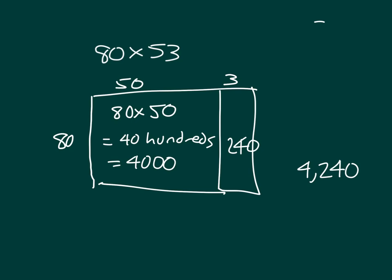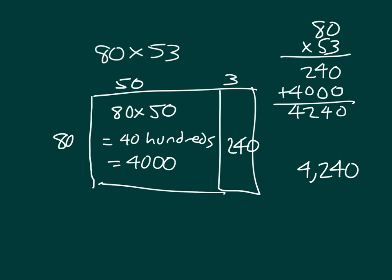Let me show you this problem vertically. 80 times 53. 3 times the 0 being 0. 3 times the 8 is 24. Since we're dealing with tens here, when we're multiplying by that 5, we place a 0. 5 times the 0 is 0. And 5 times the 8 is 40. So we have those partial products right there within that standard algorithm approach for solving 80 times 53. What we were working on today was that area model.